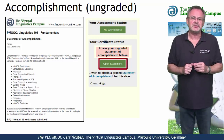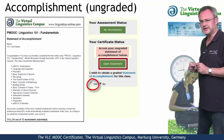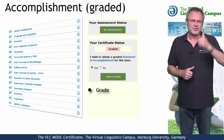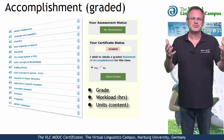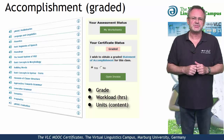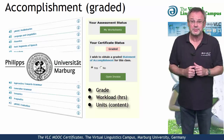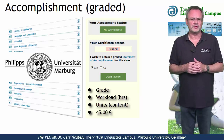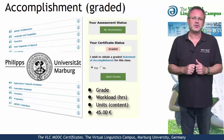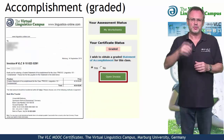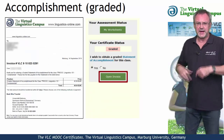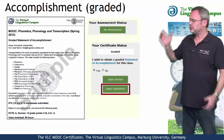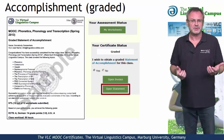If you want to obtain a graded statement of accomplishment, select yes down here. This most advanced option includes your precise grade, the workload in hours, and a complete list of all the tasks you successfully submitted. It is issued by Marburg University in conjunction with the Virtual Linguistics Campus and involves a fee of currently 45 euros. Once you have satisfied the conditions, open the invoice and transfer the money to Marburg University. Once your payment has been accepted, you can download your personal graded statement of accomplishment via mouse click.